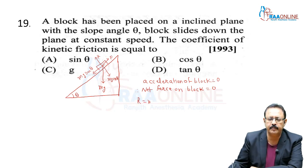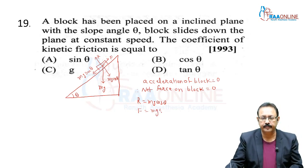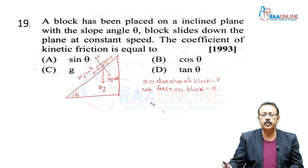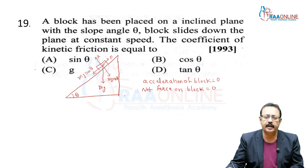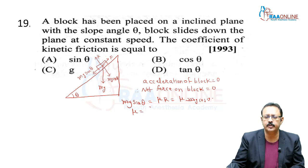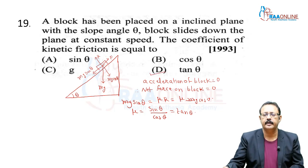mg sinθ = F = μR = μ·mg cosθ. Cancel mg. We get μ = sinθ/cosθ = tanθ. So the coefficient of kinetic friction equals tanθ. We say kinetic friction because the block is moving.